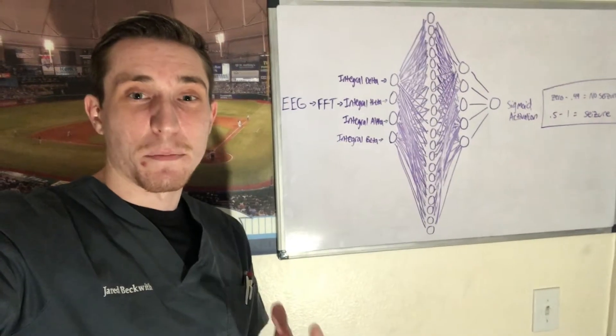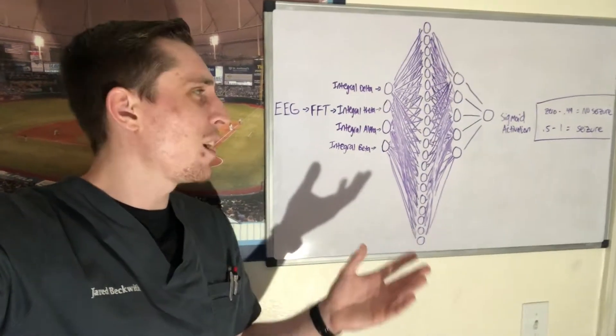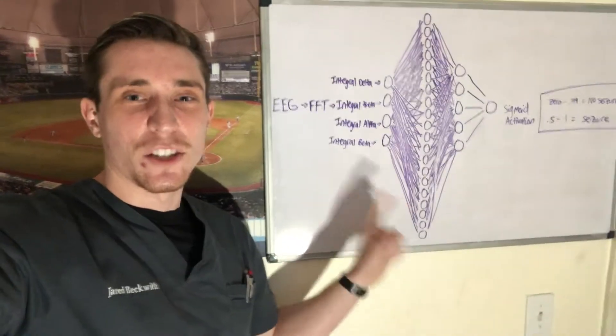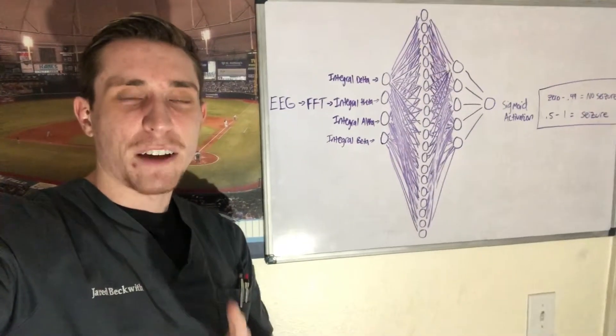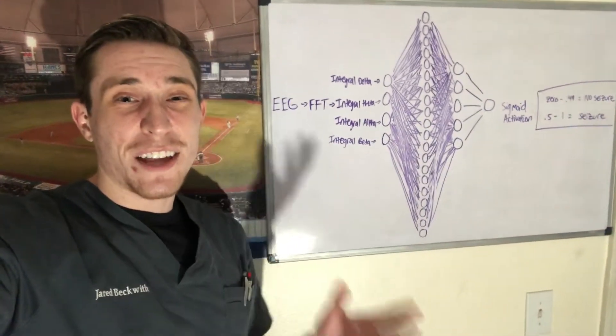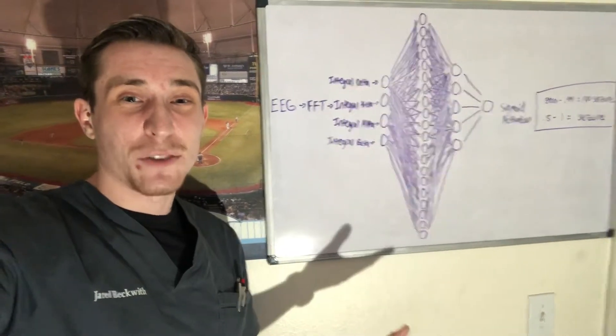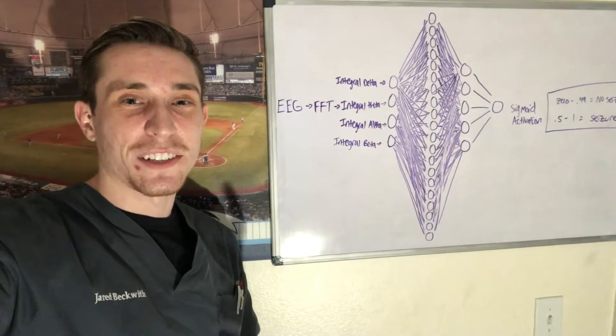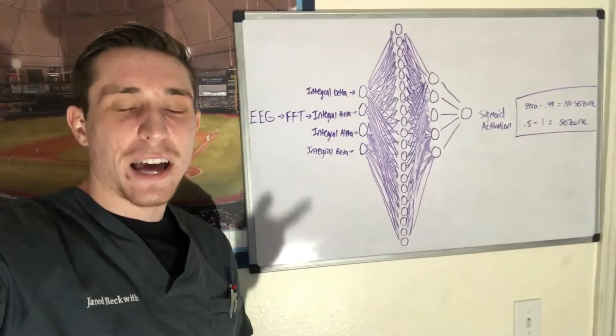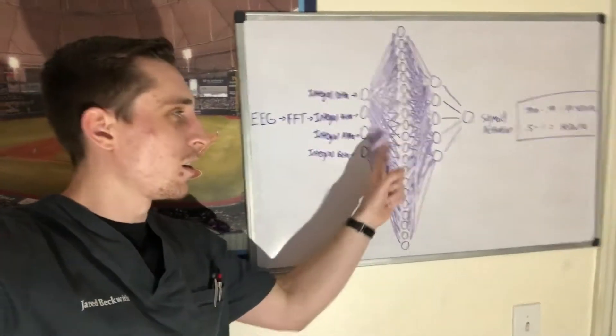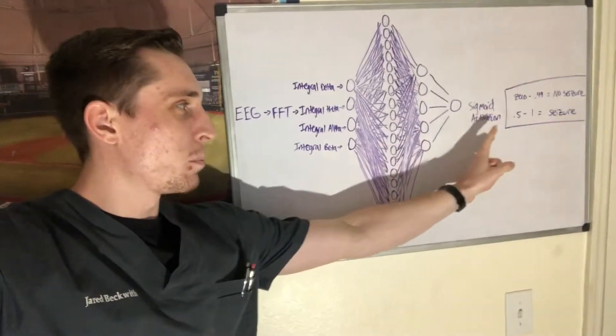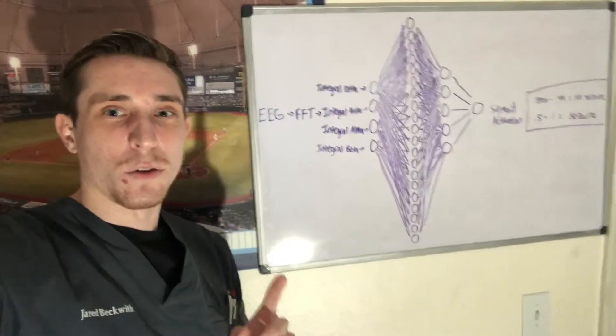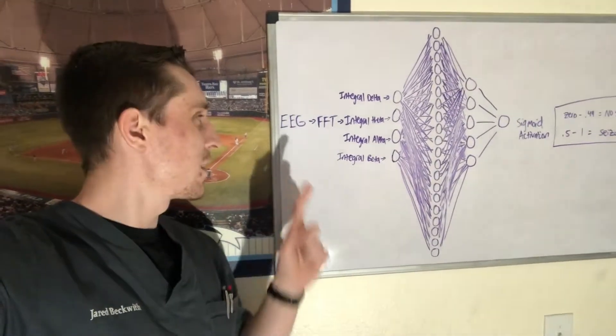So I had no idea how to input EEG data into an artificial neural network just like this one, but I finally figured it out. Now there's not that much stuff on the internet about how to do it, so I thought I'd make a video here and give a nice little demonstration on a basic way of how to insert EEG data into an artificial neural network and get a prediction whether it's a seizure or not a seizure.